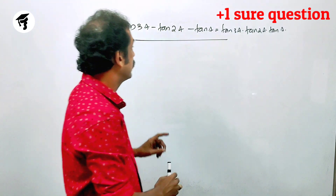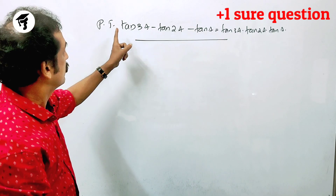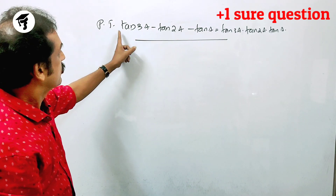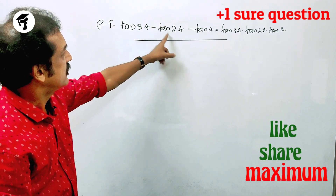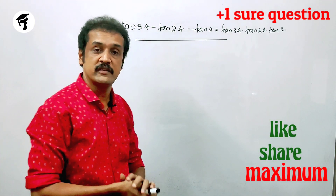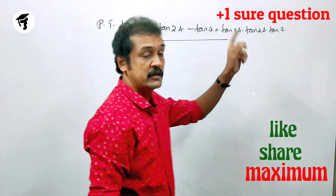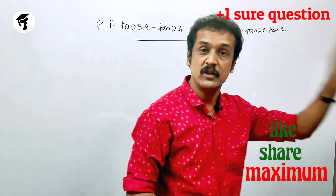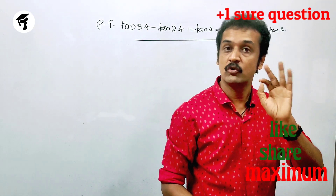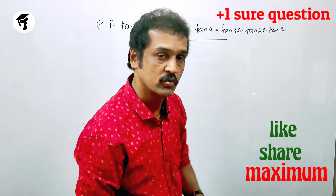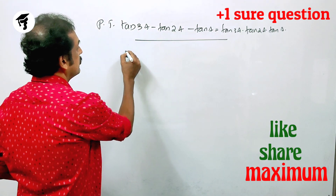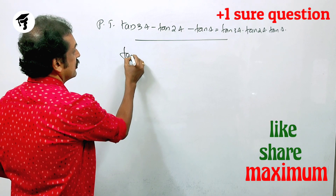We will also learn about trigonometry. We will learn that tan(3a) minus tan(2a) is minus tan(a). This means tan(3a) minus tan(2a) is minus tan(a). Let's start the exam.